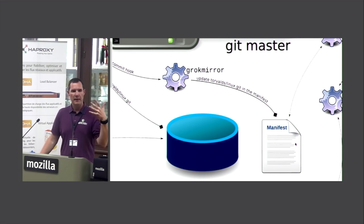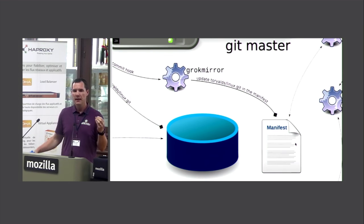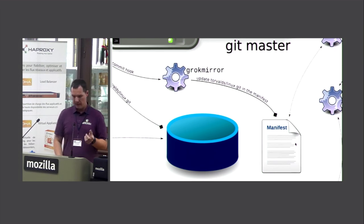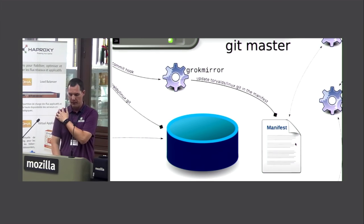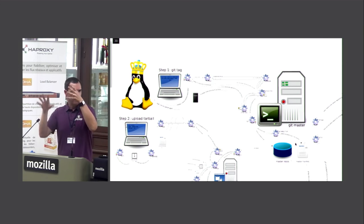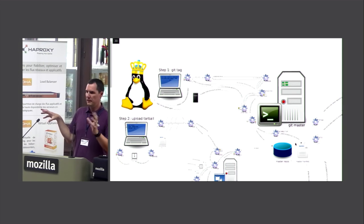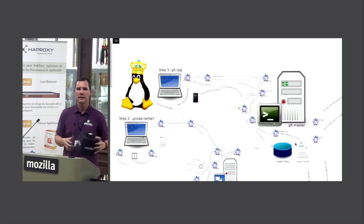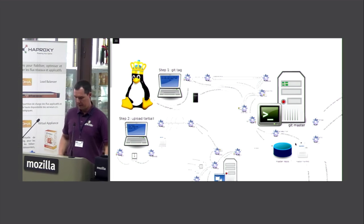If any ref changes — a master ref update, a new tag added, a tag moved — the fingerprint changes. When we mirror, we use this to know which repositories need to be pulled. So: Linus has done git push, we've verified and stored it in the master repos, and Linus's job of releasing a git tag is done at this point.